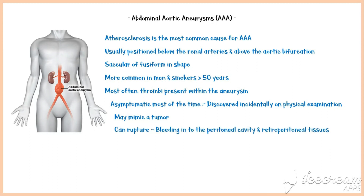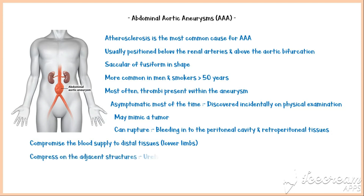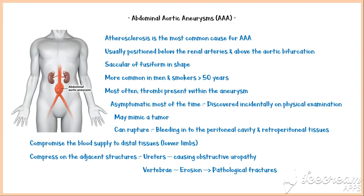These aneurysms can rupture and bleed into the peritoneal cavity and retroperitoneal tissues. They can also compromise the blood flow to the distal organs such as lower limbs. Compression on adjacent structures by the aneurysm, especially ureters, can cause obstructive uropathy. Compression on the vertebrae can cause erosions and eventually pathological fractures. Finally, thrombi within the aneurysm can embolize, causing ischemic complications in distal organs that have an end arterial supply.